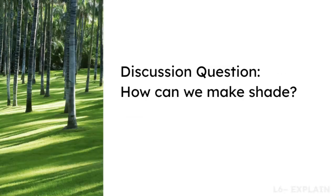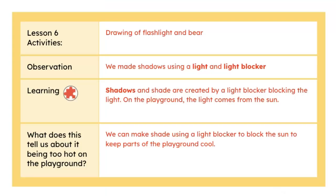In the explain portion, you will hold a class discussion to share findings from the shadows investigations. Use the provided questions to guide your discussion around how can we make shade. The goal of this class discussion is to compare how students use the materials to make shadows and to identify the role of light and light blocker in making shadows. Use the discussion to create the Lesson 6 summary chart.